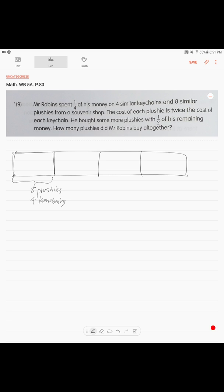We're going to come back to the second sentence. The third sentence tells us that he bought some more plushies with half of his remaining money. So this is the remainder. How can we divide three into half?